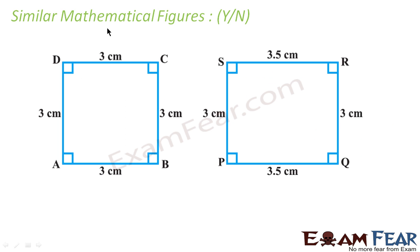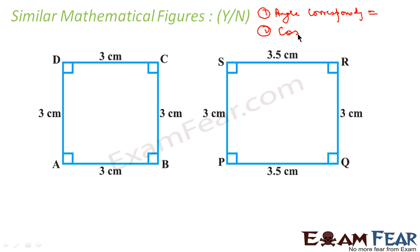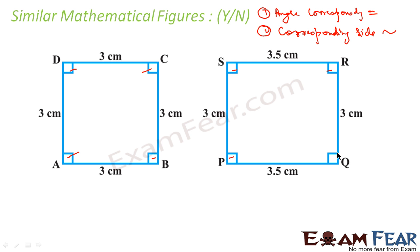Here we have to tell whether it is similar or not. For two objects to be similar, one thing is corresponding angles should be equal, and the second thing is corresponding sides should be proportional. So we will check if the angles are equal or not. If you see, this is 90 and these are equal — 90, 90 corresponding angles equal. All the corresponding angles are equal.